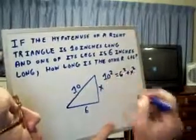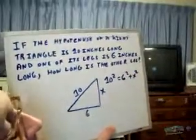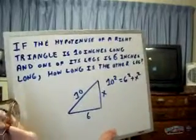So we'll square the ten. Ten times ten is a hundred. We'll square the six. Six times six is thirty-six. We subtract thirty-six from a hundred and we'll get sixty-four.